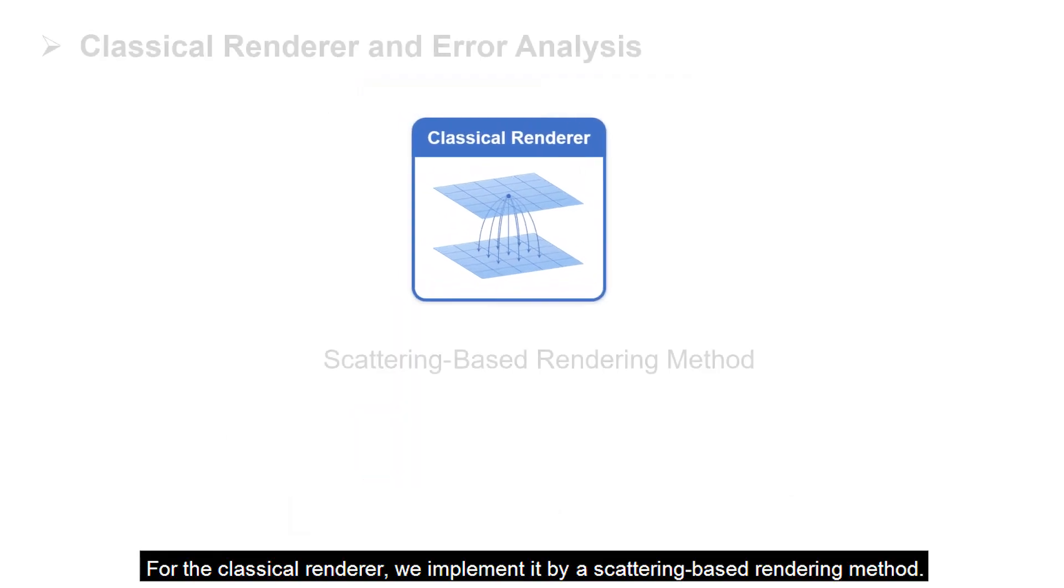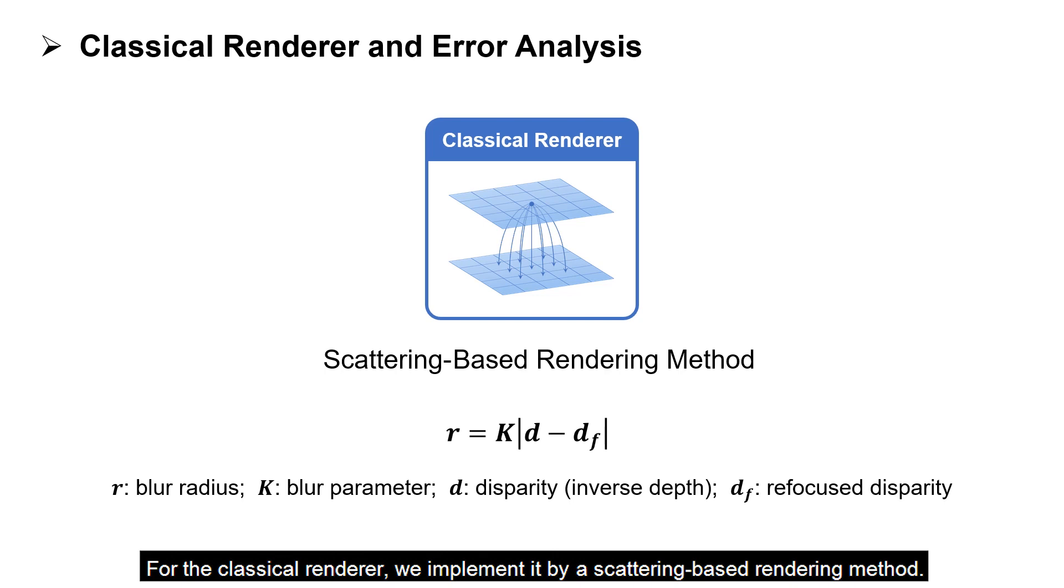For the classical renderer, we implement it by a scattering-based rendering method. The core idea of this method is scattering each pixel to its neighbor areas according to its blur radius.